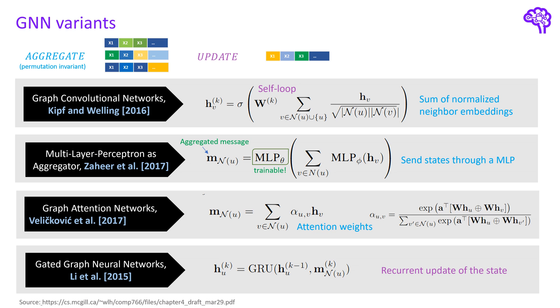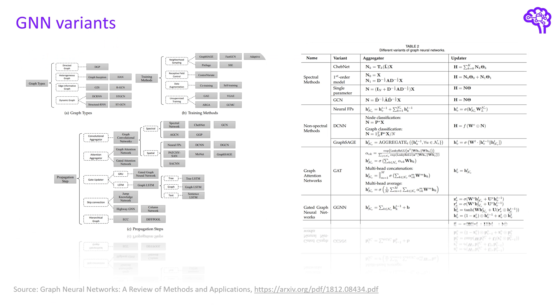Finally gated graph neural networks use a recurrent unit to update the state iteratively over time. Besides these introduced variants they exist many more in the literature but don't be scared they all just use different approaches for the aggregate and update function.